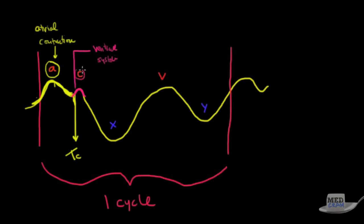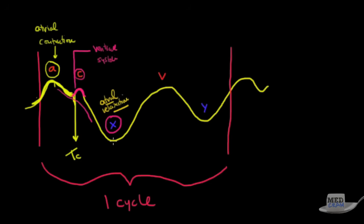Whichever explanation you prefer, the C wave represents the beginning of ventricular contraction. Now that the tricuspid valve is closed, the atria continue to relax — they started relaxing earlier and continue downward. The X descent specifically represents atrial relaxation, and this is important to remember. The X descent causes the pressure in the right atrium to go down.